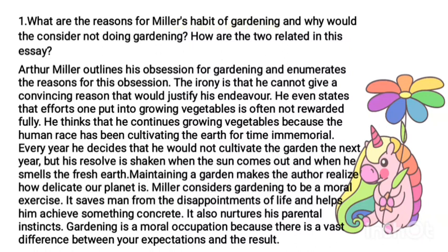Four longer question answers follow. What are the reasons for Miller's habit of gardening and why would he consider not doing gardening? Arthur Miller outlines his opposition to gardening and enumerates the reasons for his opposition. The irony is that he cannot give a convincing reason to justify his endeavor. He even states that the effort one puts into growing vegetables is often not fully rewarded. He thinks he continues growing vegetables because the human race has been cultivating the earth since time immemorial. Every year he decides he would not cultivate the garden, but he resolves his hesitation when the sun comes out and when he smells the fresh earth.